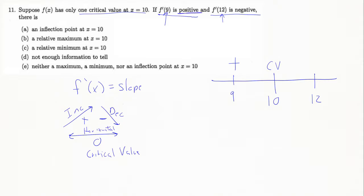So again, 9 they told us was positive, so I put a plus sign down above 9, and that tells me that my graph was increasing coming into that critical value.